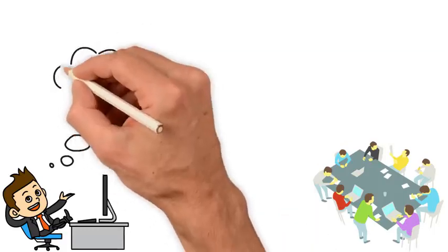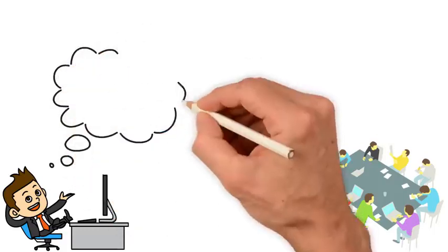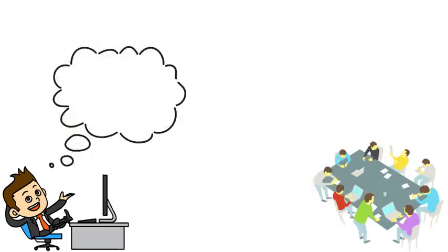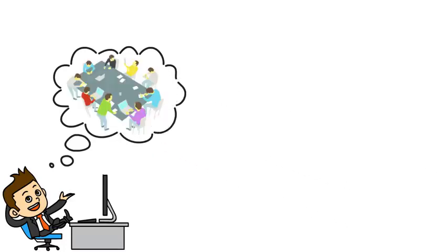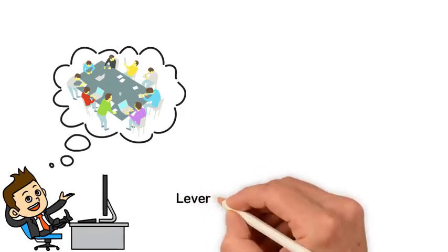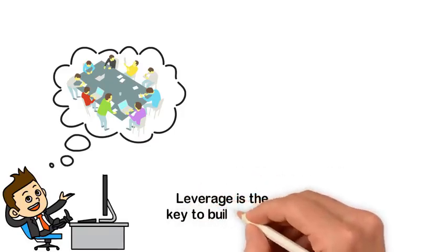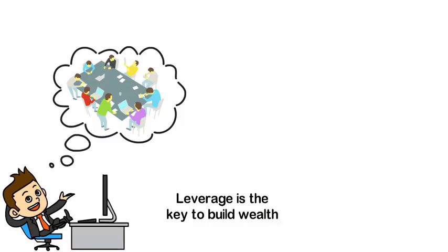If you want to be rich, your goal should never be to get a better job, work two jobs or work 20 hours every day. Your goal should be to work 1,000 hours every day while you only work 5 hours. The only way this is possible is to make other people and technologies work for you.